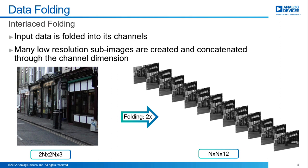But how does data folding, our technique, work? We create lower resolution versions of our input by taking every nth pixel from height and width of the original image, and concatenating those lower resolution images in the channel dimension. Assume your image has only three channels and you have a folding factor of two — you will end up with a 12-channel tensor with lower spatial resolution. The data is still there; we are just moving it.